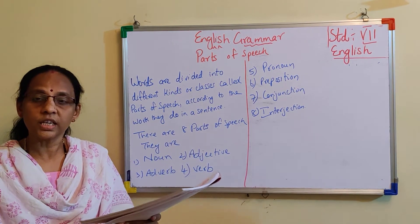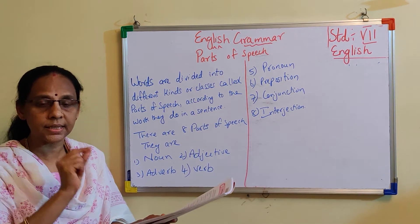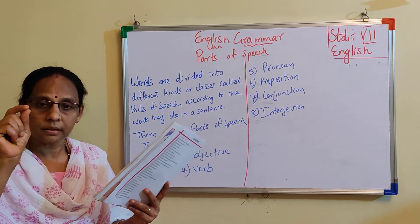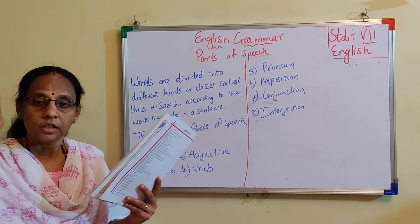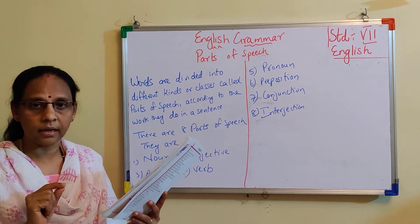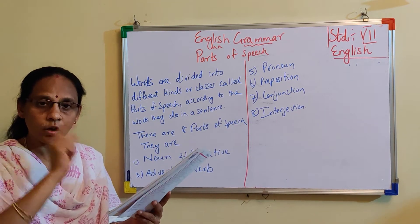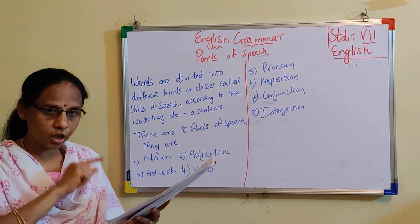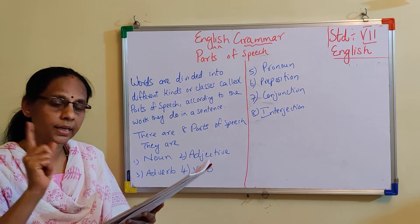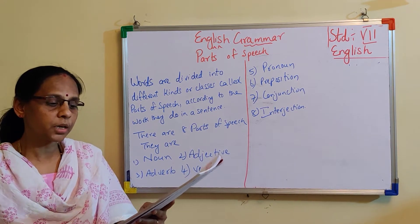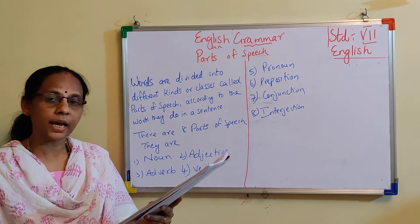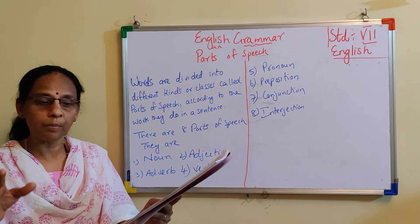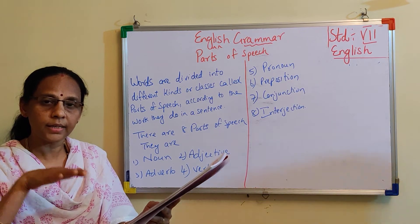Pronoun is used instead of a noun. For example, 'Sita is a studious girl. She studies in 10th standard.' I didn't use Sita again — instead I said 'she.' So 'she' is used instead of the noun 'Sita.' Preposition means it shows place, time, and position. For example: under the table, under the bridge, on the table, inside the book.